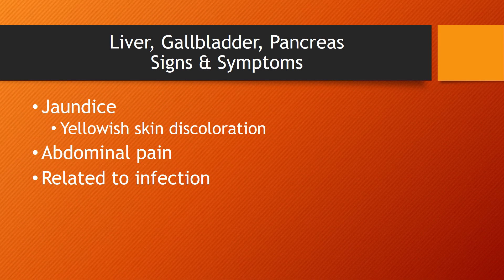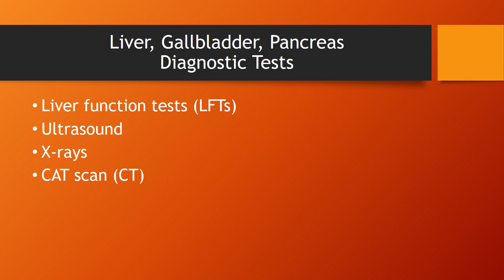Common signs and symptoms with liver, gallbladder, and pancreas disorders include jaundice — the yellowish skin discoloration — which is more directly pertaining to issues with the liver, where problems with bile can cause that discoloration. Most people with liver, gallbladder, or pancreas issues will complain of abdominal pain, usually acute with a rapid onset. There are also related signs and symptoms of infection — for example, if there is a perforation, septicemia will give us signs of infection — as well as nausea and vomiting.